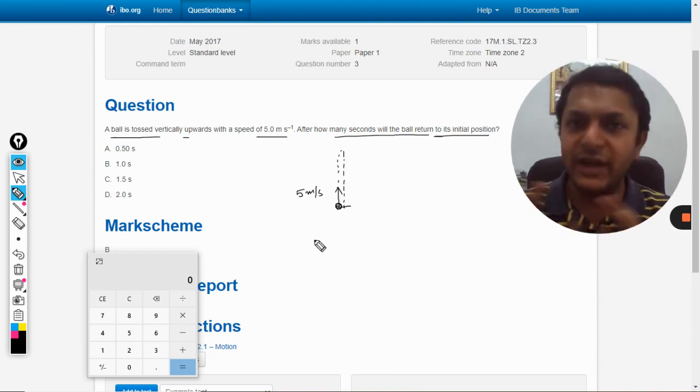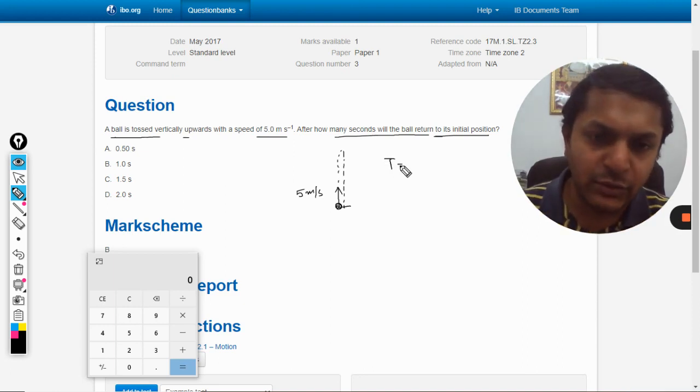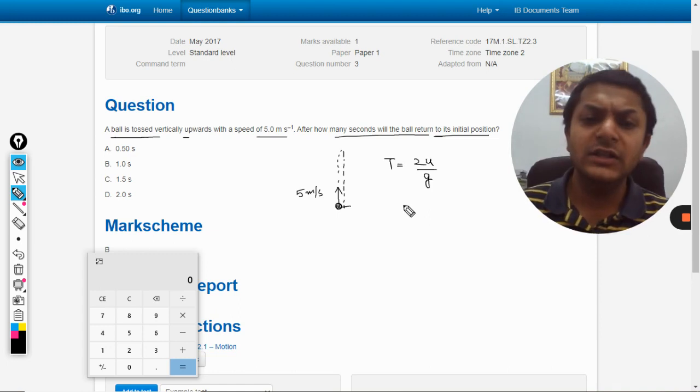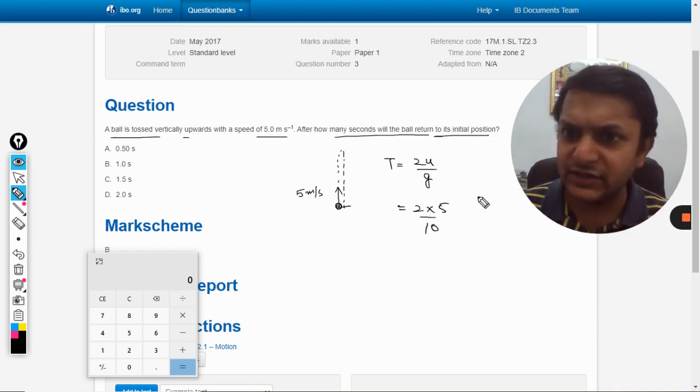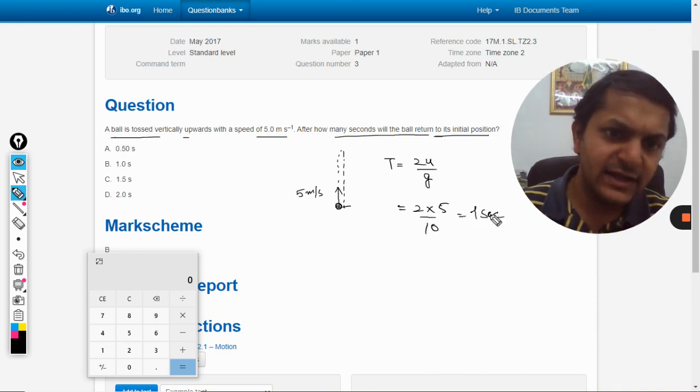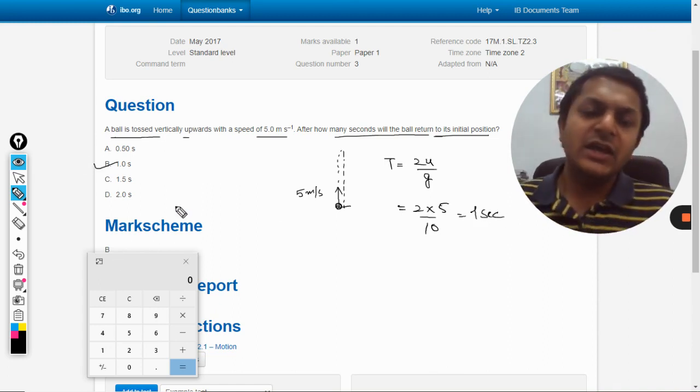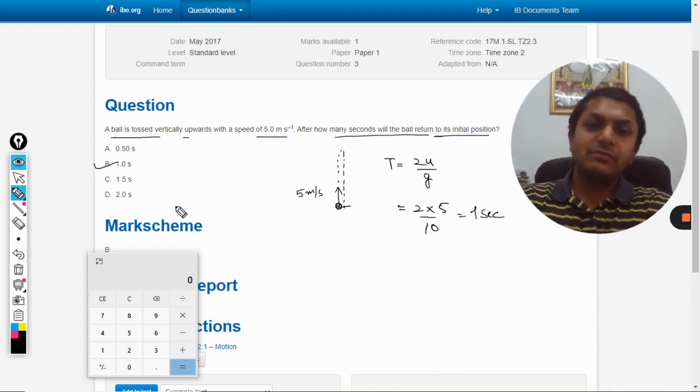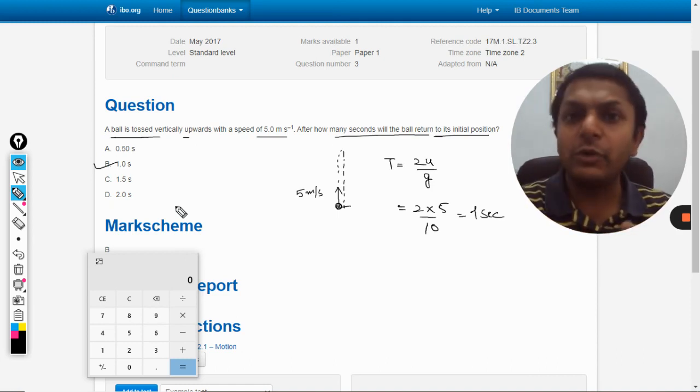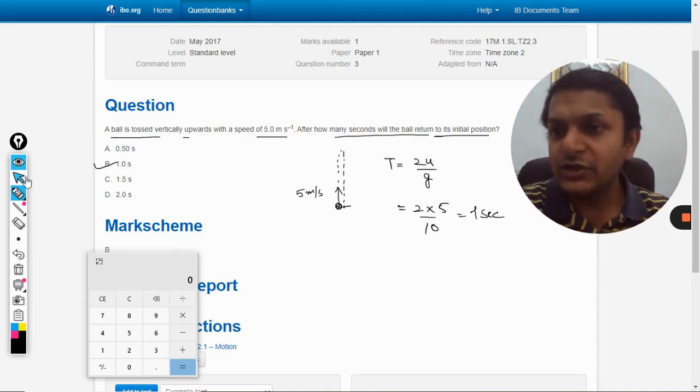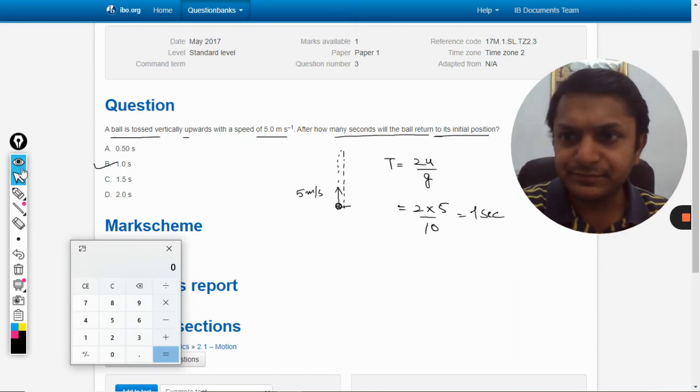I know the formula is 2u by g. Let me see: 2 into 5 divided by 10, so it is 1 second. Yes, the answer is 1 second, but from where this formula comes, that's the big thing. So let me tell you.